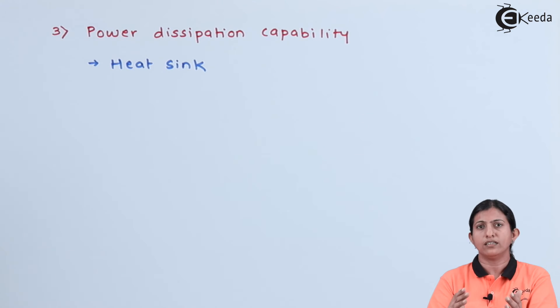If the amount of heat dissipated by the transistor is greater than the ideal power rating, then the transistor is likely to burn out. Hence, to increase the power dissipation capability of the transistor, we can connect a metal piece which is black in color, and that piece is called a heat sink.